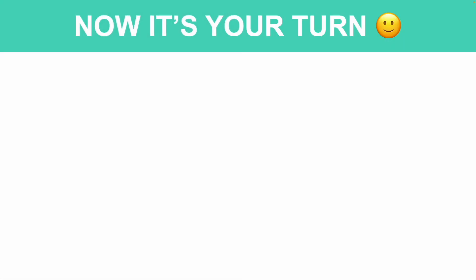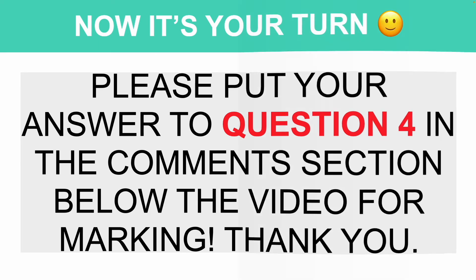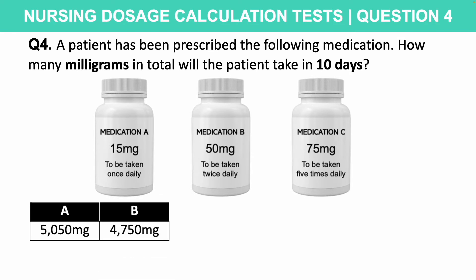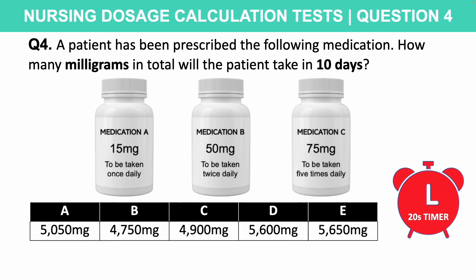Now it's your turn to tackle a question just like this. Please put your answer to question four in the comment section below for marking. A patient has been prescribed the following medication — how many milligrams in total will the patient take in 10 days? Is it A: 5,050 mg, B: 4,750 mg, C: 4,900 mg, D: 5,600 mg, or E: 5,650 mg? You have 20 seconds on the timer starting now.